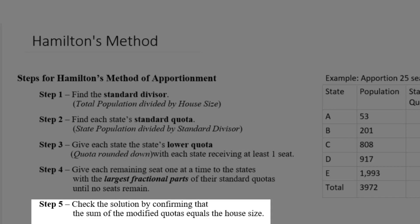And then finally, after we've handed out those extra seats, we're going to check our solution by confirming that the sum of the modified quotas — which are the lower quotas with the additional seats added in — actually equals the house size, the total number of seats.